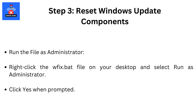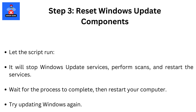Run the file as Administrator. Right-click the WFIX.bat file on your desktop and select Run as Administrator. Click Yes when prompted. Let the script run — it will stop Windows Update services, perform scans, and restart the services. Wait for the process to complete, then restart your computer. Try updating Windows again.